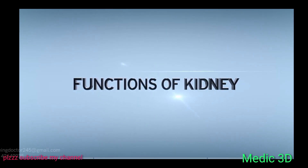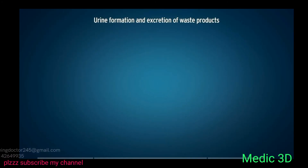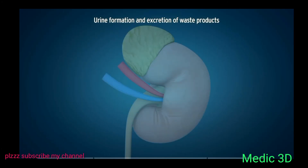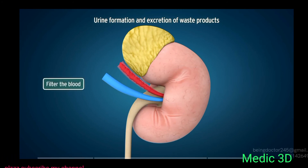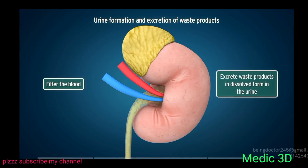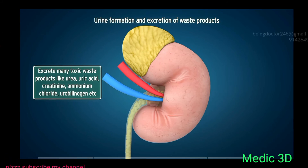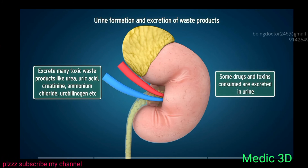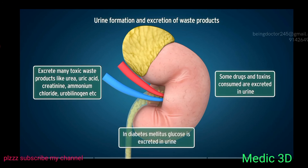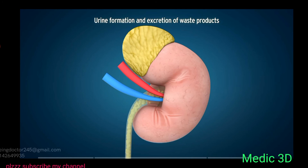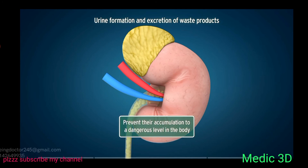The primary function of the kidneys is to filter the blood and excrete waste products in dissolved form in the urine. Kidneys form urine and excrete many toxic waste products like urea, uric acid, creatinine, ammonium chloride, and urobilinogen. Some drugs and toxins consumed are also excreted in urine. In diabetes mellitus, glucose is excreted in urine, and thus kidneys prevent dangerous accumulation of glucose in the body.